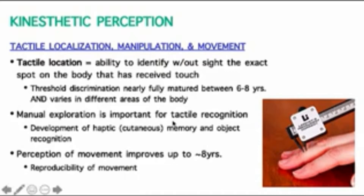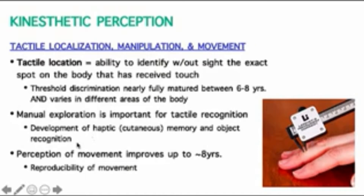Manual exploration is important for tactile recognition and helps with the development of haptic — also known as cutaneous — memory and object recognition. This is why we encourage infants to handle different objects, to understand what shape feels like, what weight feels like, different textures, and specifically their ability to recognize different objects without using visual cues. That way we know it's a true kinesthetic perception and not influenced by vision.